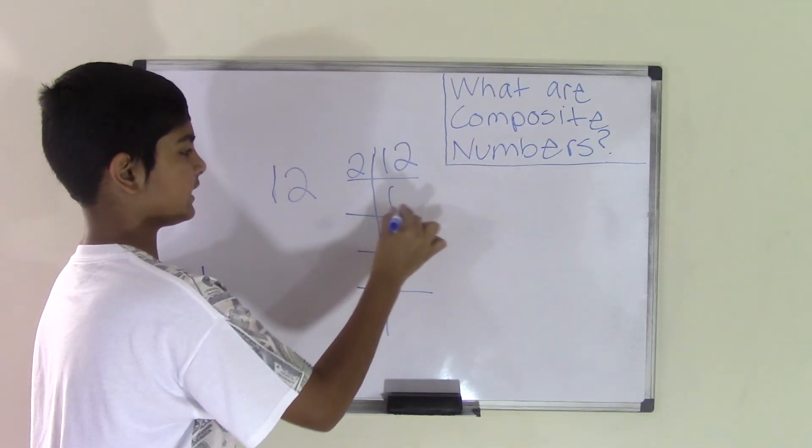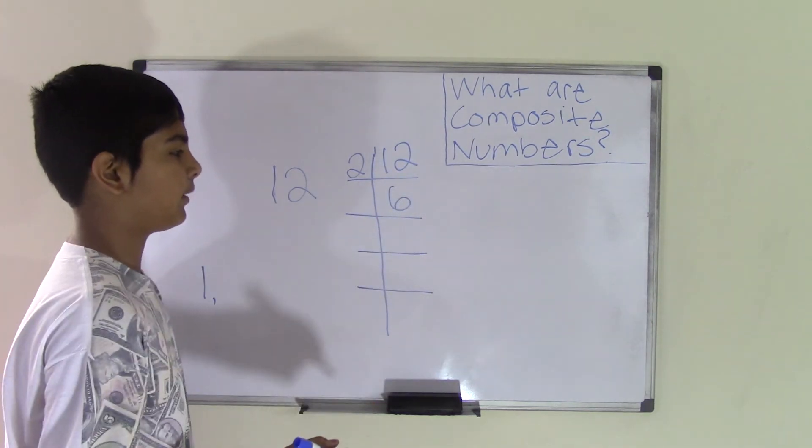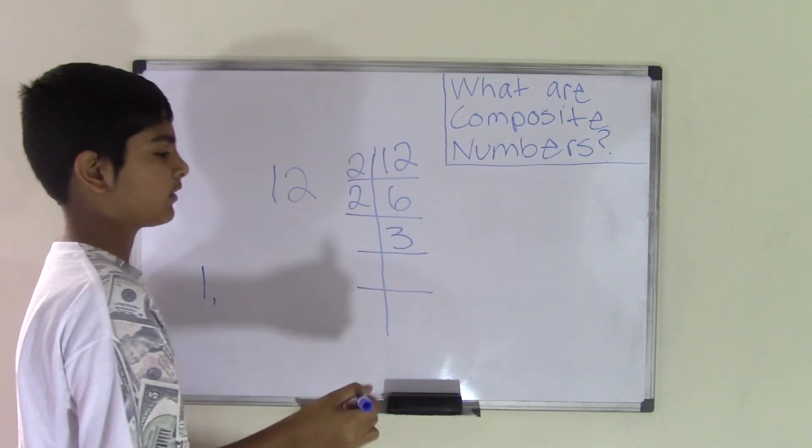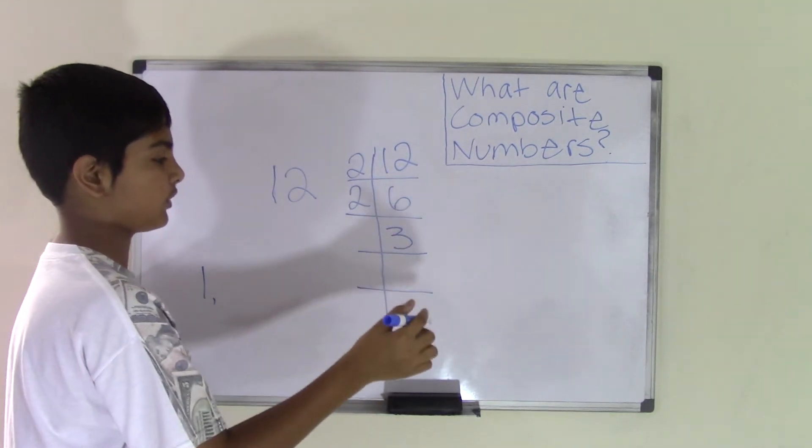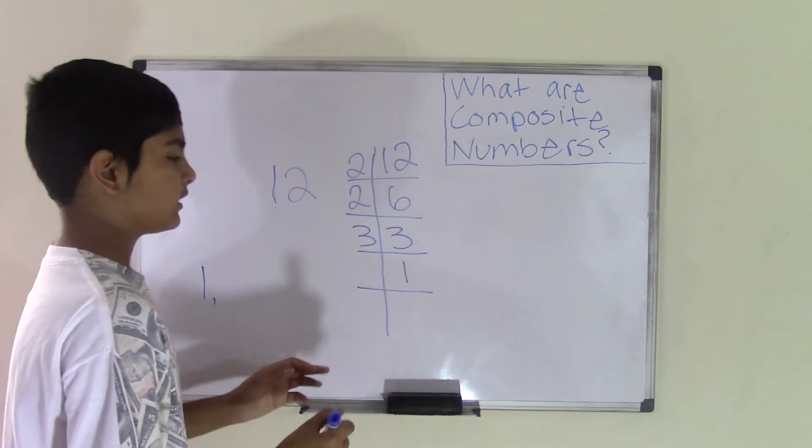So 2 times 6 is 12. Now we can break the number 6 further apart. 2 times 3 is 6. Now we can break the number 3 further apart. 3 times 1 is 3.